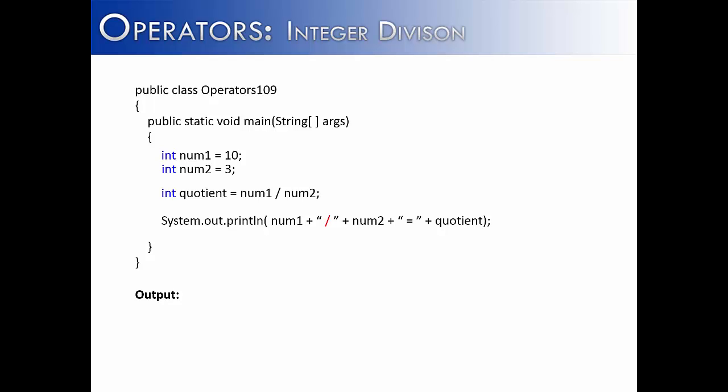And the reason being is that we expect a remainder to show up, whether it's in the form of a whole number or in the form of a decimal, whenever we do division. But integer division simply does not do that.